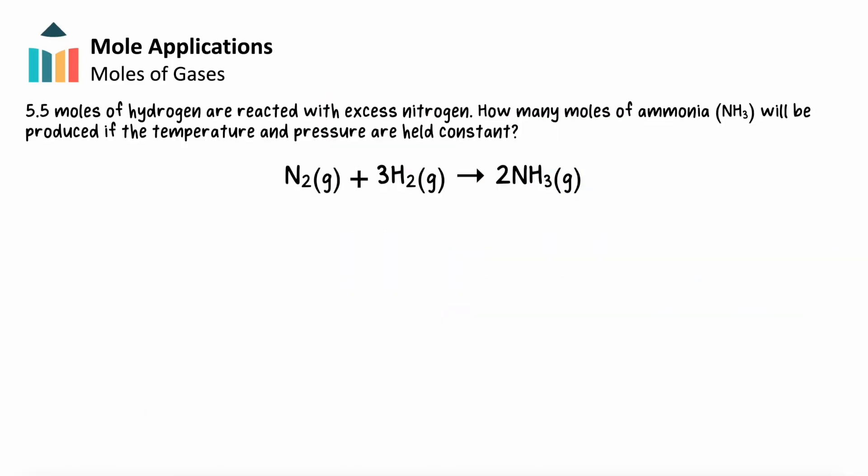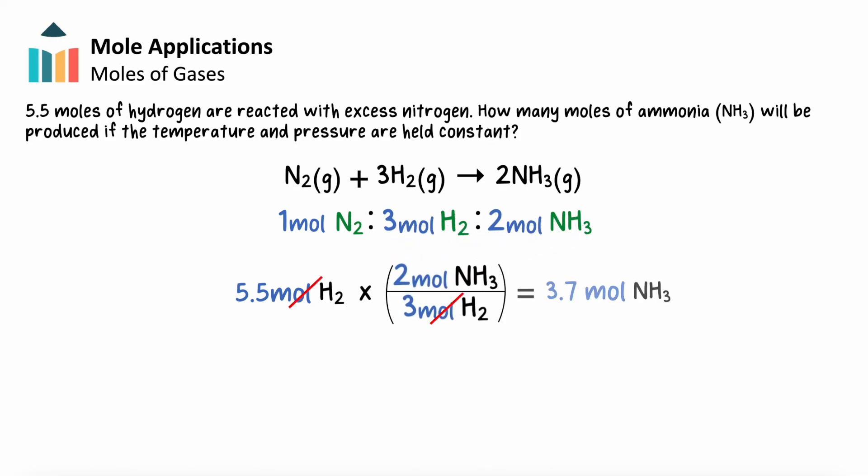Let's quickly take a look at this using the reaction equation below for the Haber process. If 5.5 moles of hydrogen are reacted with excess nitrogen, how many moles of ammonia, NH3, will be produced if the temperature and pressure are held constant? The molar amounts remain proportional as temperature and pressure do not change, meaning we can use our 3 to 2 mole ratio between hydrogen and ammonia as our conversion factor. This ratio corresponds with how these compounds will be consumed and produced and tells us that 3.7 moles of ammonia will be made when 5.5 moles of hydrogen are allowed to react in excess nitrogen.